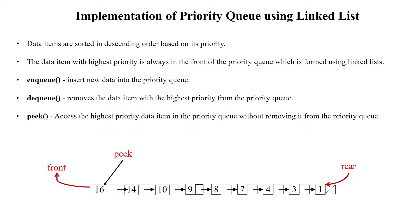Welcome to implementation of priority queue using linked list. Here I am using the singly linked list for implementing the priority queue. The linked list based priority queue is used to sort the data in descending or ascending order based on the priority key. The data item with the highest priority will always be available at the head of the priority queue.